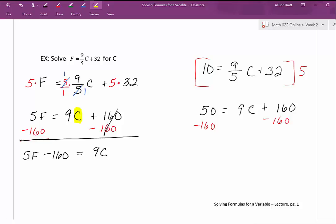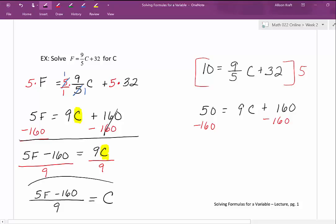The last thing we need to do to get that C all by itself is to eliminate the multiplication by 9 in front of it. To get rid of the multiplication by 9, we're going to divide by 9. I'm going to divide this whole other side by 9. We end up with 5F minus 160 divided by 9 equal to C. That is our solution for C.